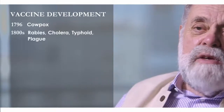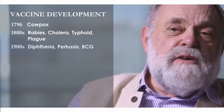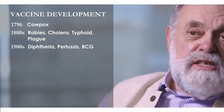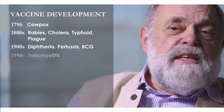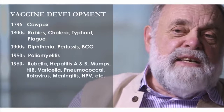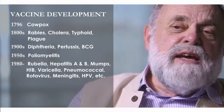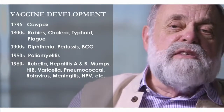Going back to vaccine development, the first was in 1796, where Jenner used cowpox to protect people against smallpox. In the 1800s, we had the development of rabies, cholera, typhoid, and plague vaccines. A huge increase occurred in the 1900s with diphtheria, pertussis, and BCG — which is for tuberculosis. In the 1950s, we developed poliomyelitis vaccine, and then in the 1980s, 90s, and to the present day, there's been a huge development in vaccines such as hepatitis A and B, pneumococci, rotavirus, meningitis, and others.